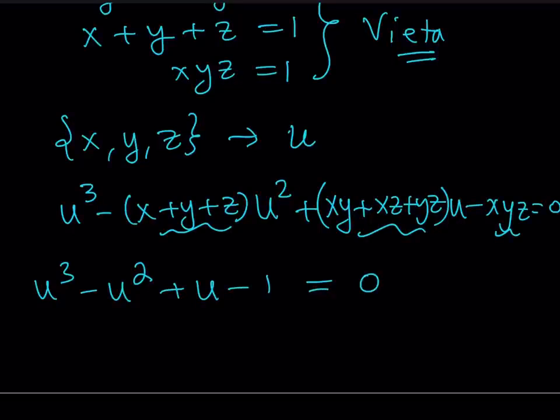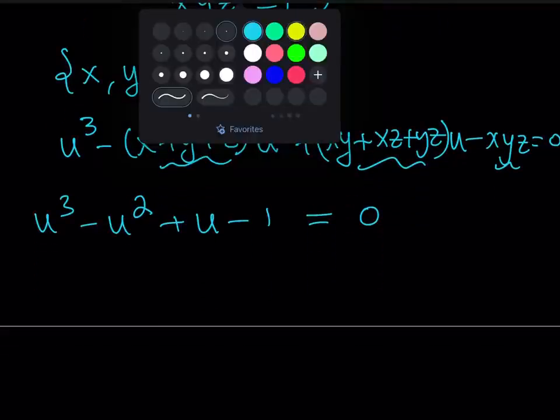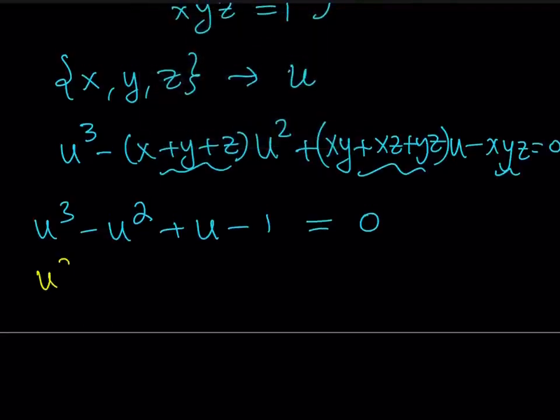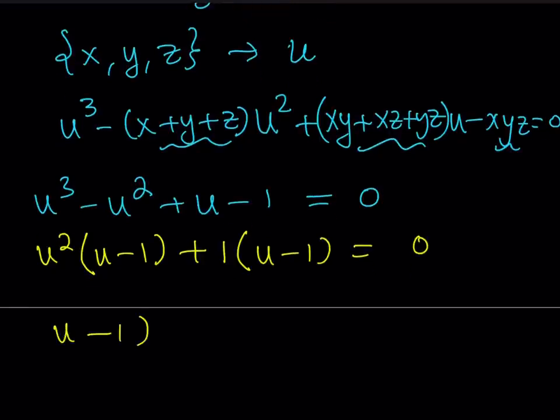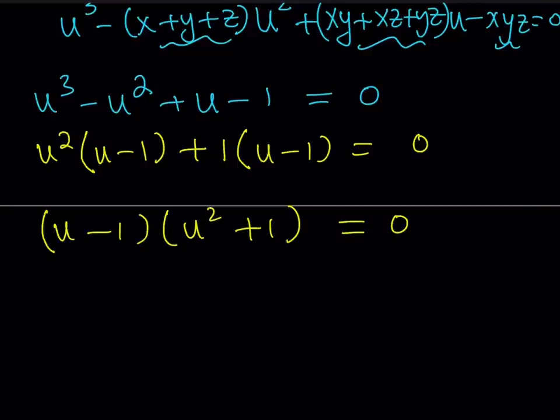So let's go ahead and solve it. Are we going to use the cubic formula? No, we're just going to use factoring because this is so simple. I take out U squared. I get U minus 1. I take out 1. I get U minus 1. So I can take out U minus 1, and this gives me U squared plus 1.